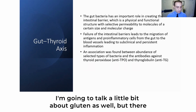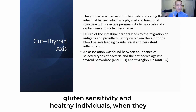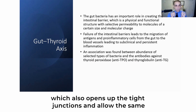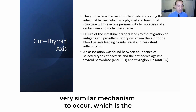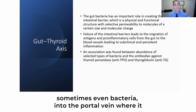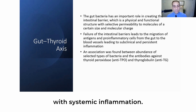There is a study that showed that with celiac patients, gluten sensitivity, and healthy individuals, when they eat gluten, there is a secretion of zonulin, which also opens up the tight junctions and allows a very similar mechanism to occur — the migration of antigen pro-inflammatory cells, and sometimes even bacteria, into the portal vein, where it starts to create and is associated with systemic inflammation.